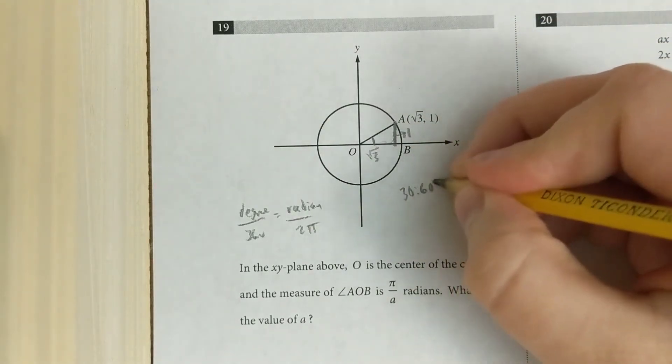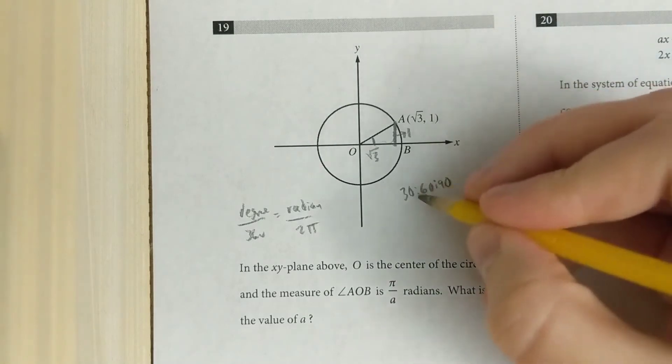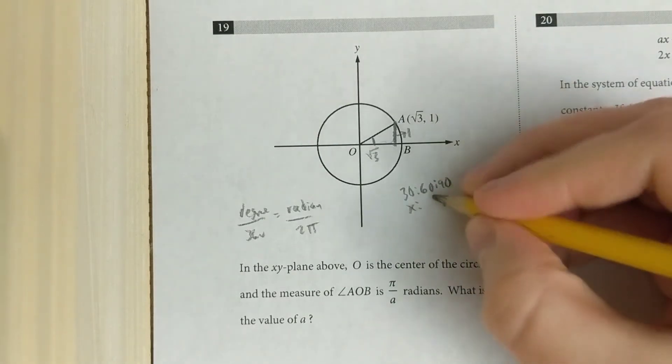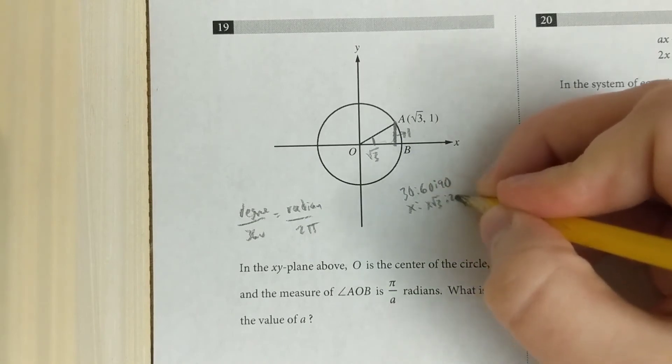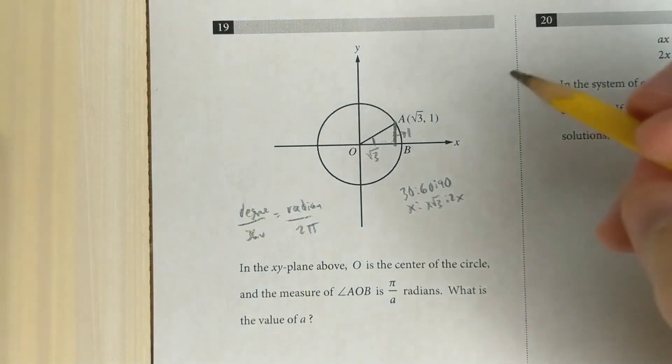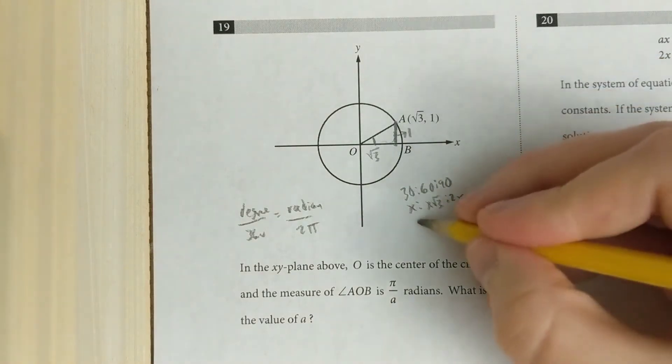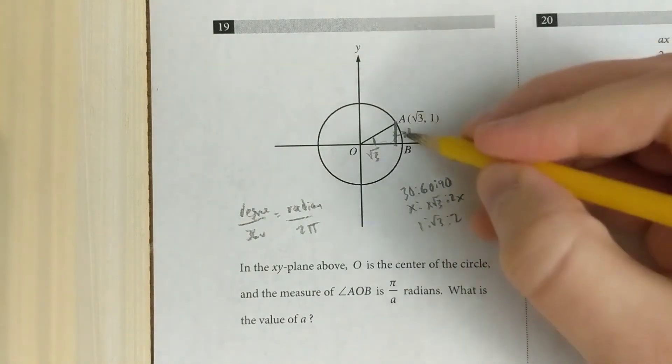And when I see those numbers, I think of a 30, 60, 90 triangle, where if the side across from angle 30 is x, then the one across from 60 is x root 3, and the one across from 90 is 2x. So in this case, it's just 1 root 3 and 2. Those are our sides.